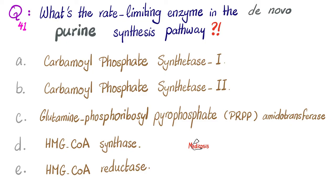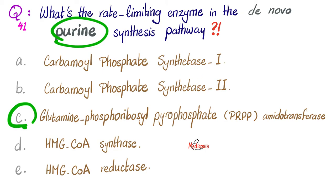The answer is C — for de novo purine synthesis, you go with PRPP amidotransferase, phosphoribosylpyrophosphate-amidotransferase. Carbamoyl-phosphate synthetase-1 is the rate-limiting enzyme in the urea cycle. CPS2 is the rate-limiting enzyme in de novo pyrimidine synthesis, not purine. PRPP amidotransferase is the rate-limiting step in purine synthesis. HMG-CoA synthase is the rate-limiting step in ketogenesis. HMG-CoA reductase is the rate-limiting step in cholesterol synthesis de novo by the liver's hepatocytes.